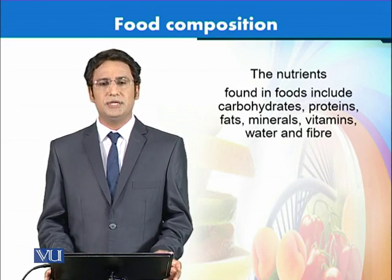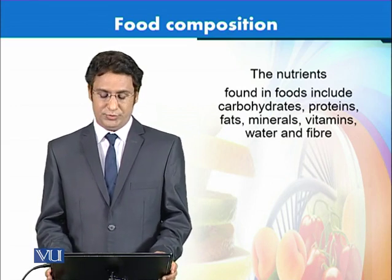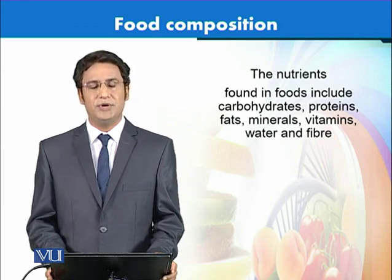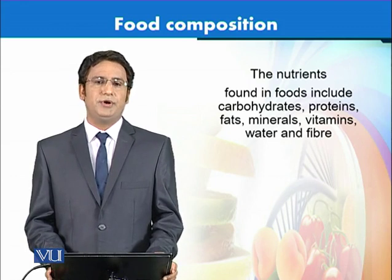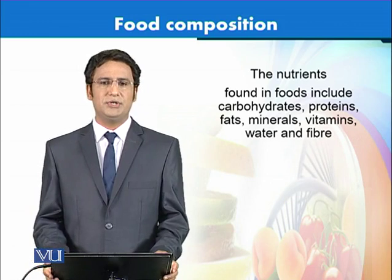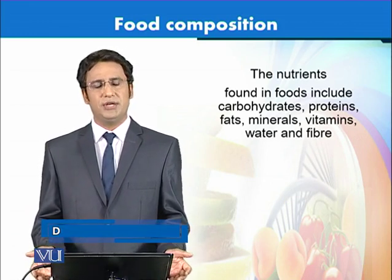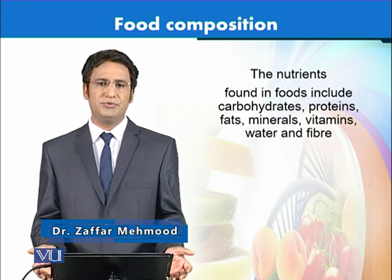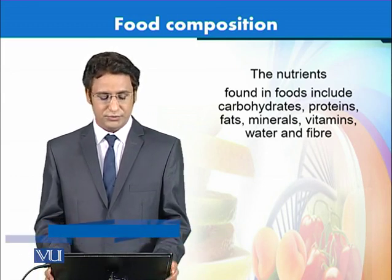The general composition overall in foods includes carbohydrates, proteins, fats, minerals, vitamins, water, and fiber. Different foods like sugars would have only one nutrient in them, whereas certain other foods like milk would have all these elements of food chemistry and food composition present in them.